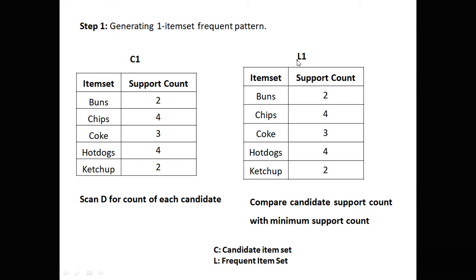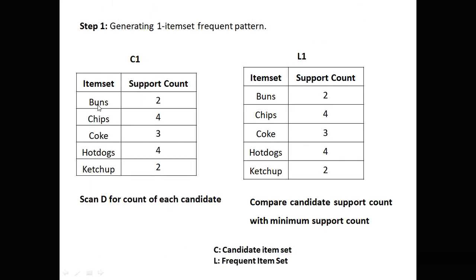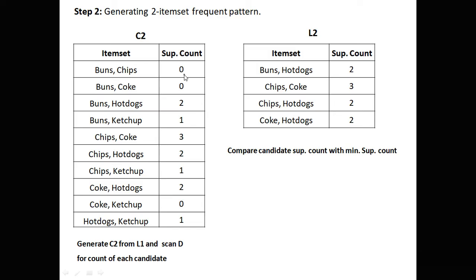Next, from L1 we generate C2, and from C2 we generate L2. Step 2: Generating two-itemset frequent pattern. In C2 we take all combinations — buns with chips, coke, hot dogs, and ketchup; then chips with coke, hot dogs, ketchup; coke with hot dogs, ketchup; and hot dogs with ketchup. Their support counts are counted from the original database. For example, buns-chips is not present at all, so its support count is zero. Entries with support count greater than or equal to 2 are promoted to L2, giving us 4 qualified entries.